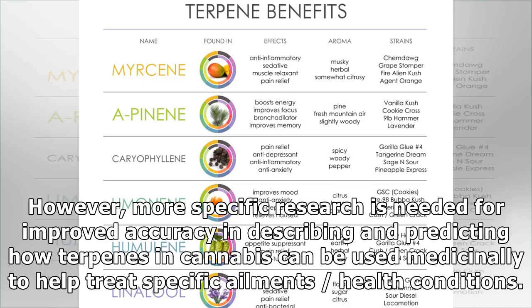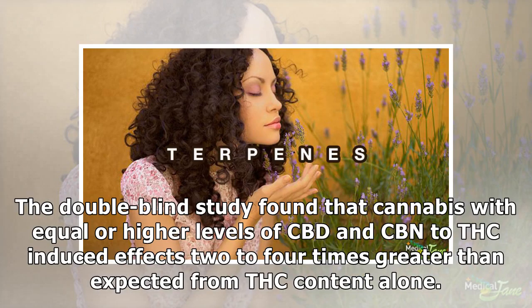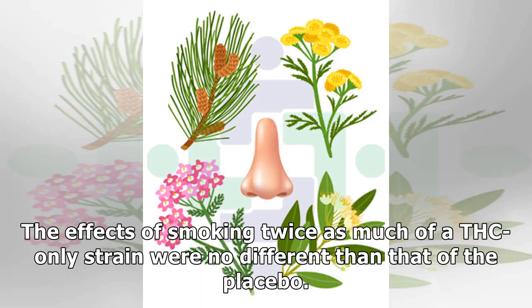More specific research is needed for improved accuracy in describing and predicting how terpenes in cannabis can be used medicinally to treat specific ailments. The Carlini et al. study demonstrated that there may be potentiation of the effects of THC by other substances present in cannabis. The double-blind study found that cannabis with equal or higher levels of CBD and CBN to THC induced effects two to four times greater than expected from THC content alone.